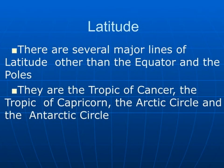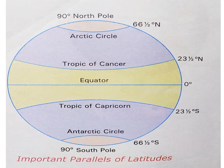There are several major lines of latitude other than the equator and the poles. They are the Tropic of Cancer, the Tropic of Capricorn, the Arctic Circle, and the Antarctic Circle. Let us discuss with the help of a diagram. Here we can see the equator at zero degrees.